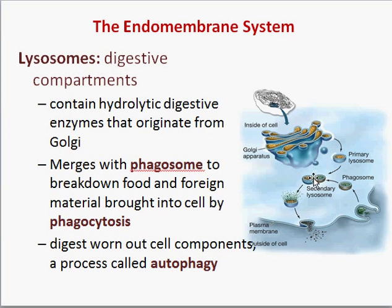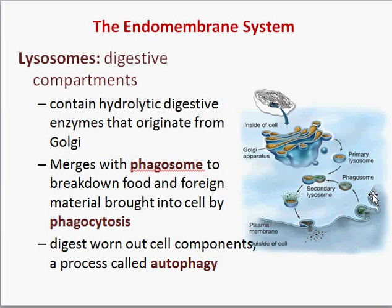Lysosomes are important because they're a special type of vesicle with digestive enzymes inside. Remember, enzymes are proteins, and these are used for digestion of material. Phagocytosis is the process of a cell eating material from its environment. The cell's plasma membrane encloses debris or food from the environment and forms a vesicle called a phagosome. That food material inside the phagosome fuses with a lysosome that has digestive enzymes — lyse means to break — so these enzymes break down food. When the lysosome and phagosome fuse, the material is digested, releasing nutrients for the cell. An example would be macrophages or other immune system cells that eat foreign invaders like bacteria and kill them this way.